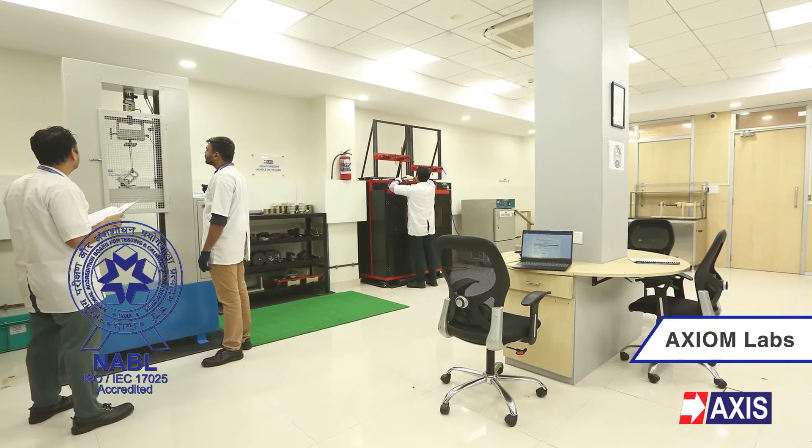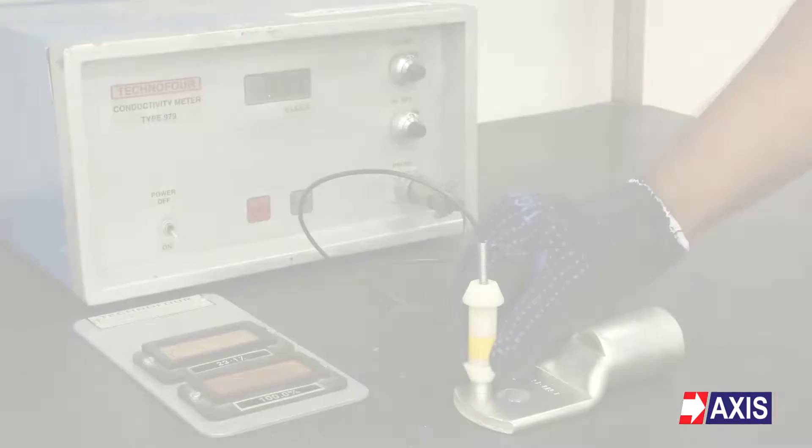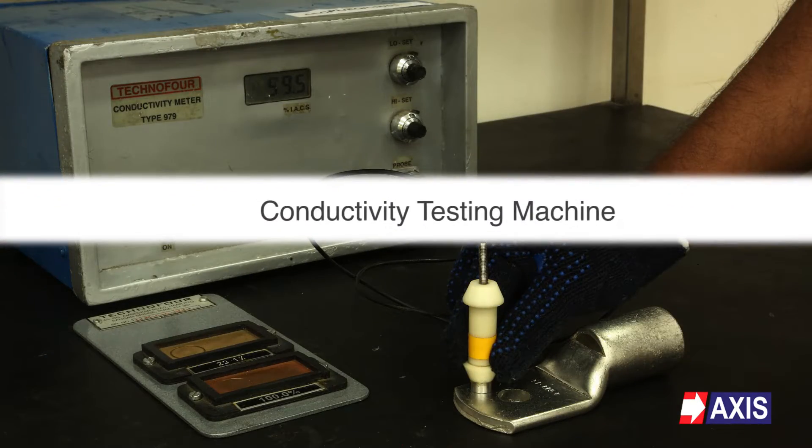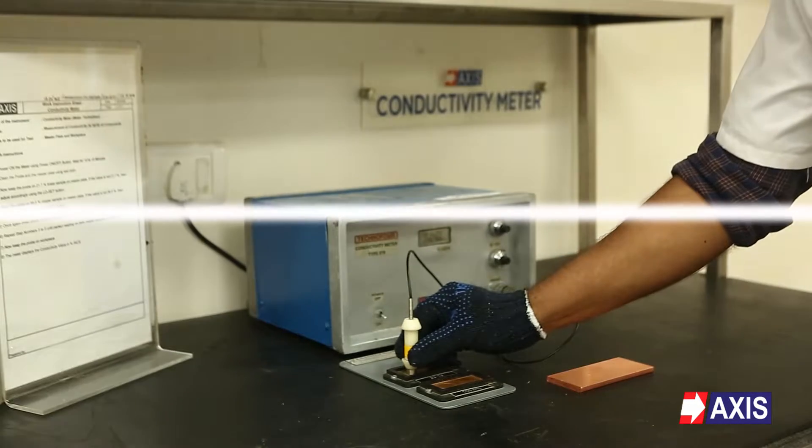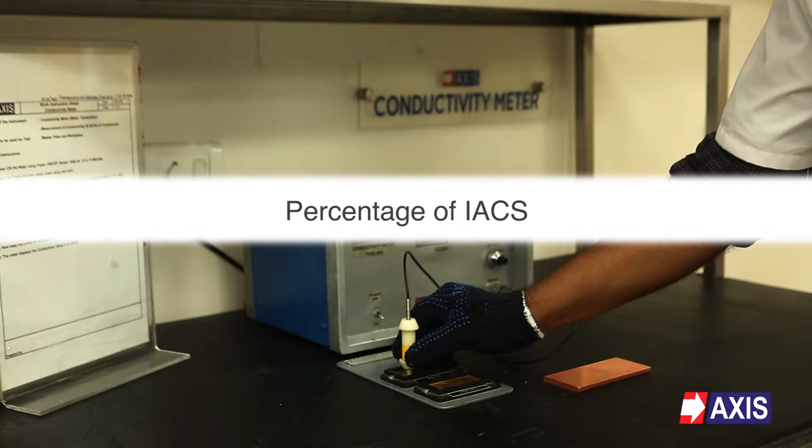At our NABL accredited Axiom labs, the electrical conductivity test is performed using the conductivity testing machine. It measures conductivity of metals in the unit of percentage of IACS.